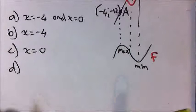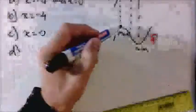Part C: x for which the graph of f(x) is decreasing. That means this section in between, so it's x between -4 and 0, i.e., -4 < x < 0.